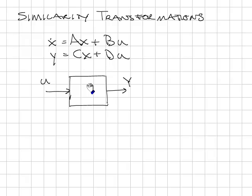The way to move from one internal representation to another is called a similarity transformation. Here's the math behind it. I'm going to define my new state, Z, with the relationship like this.